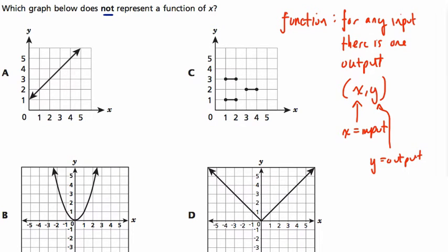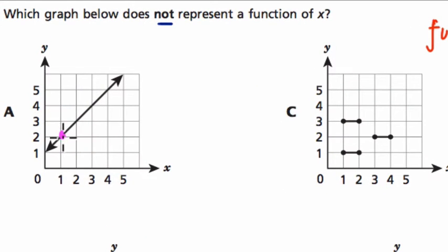So here in the first graph, this is a function. Well, you might be able to tell from what you see here, but for example, this point, it's the point 1 comma 2. So x is our input, 1, and 2 is our output. So there's one input, 1, with one output. And the same is true for the next point, it's 2 comma 3. 2 is the input, and 3 is the output. 3 is the input, and the next point, and 4 is the output.